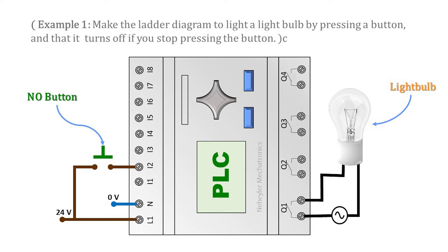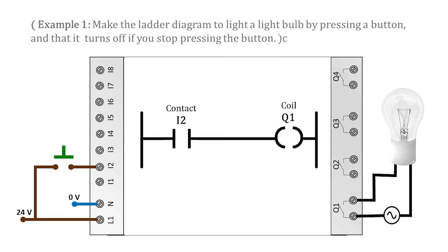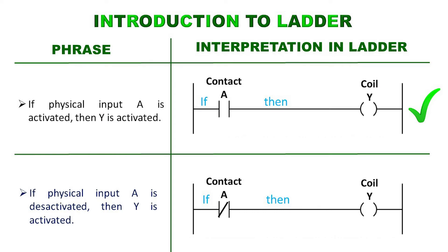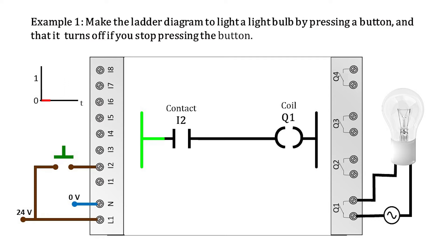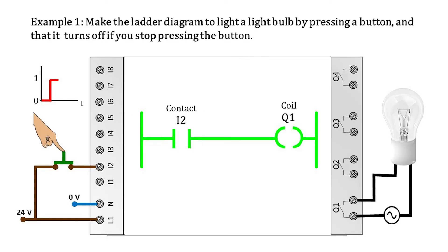This would be the ladder diagram for this example, since it meets the condition: if the physical input A is activated, then Y is activated. Input A is the button, connected to input I2, so in the ladder diagram it is represented by a contact labeled I2. The coil labeled Q1 represents the physical output where the bulb is connected. When powering up the PLC, the left vertical line is activated waiting for the conditions of the physical input — the normally open push button. When the button is pressed, it closes the circuit, sending a high voltage level to the PLC input, which translates into a logic 1 that reaches contact I2, activating it. Then the horizontal line is energized, activating coil Q1, which sends a signal to close the Q1 output, making the light bulb turn on. The bulb will stay on as long as the button is pressed.